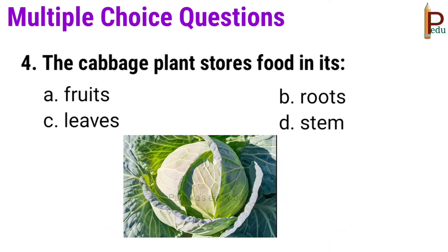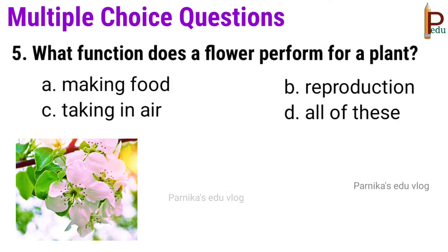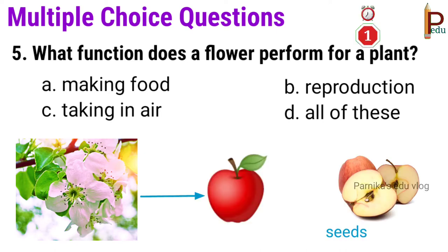Fourth one: the cabbage plant stores food in its leaves. Fifth one: what function does a flower perform for a plant? The answer is B — reproduction.